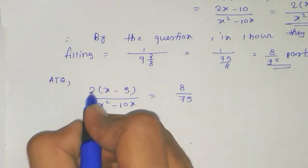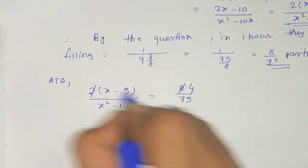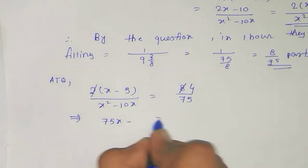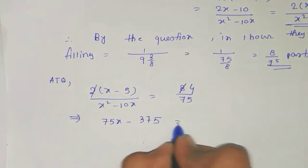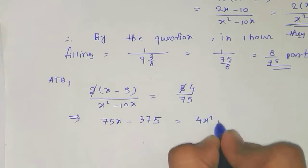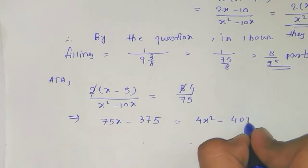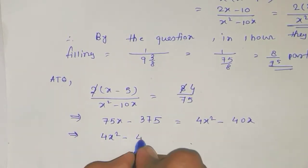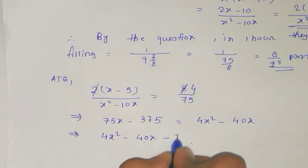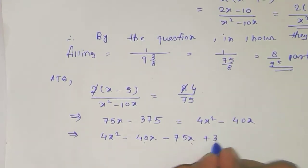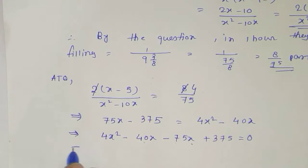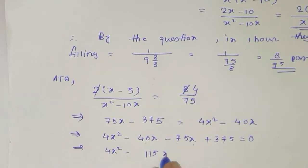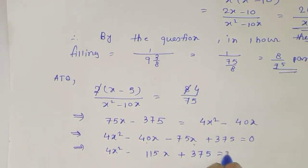Simplifying, the 2 and 8 give us 4 after cancellation. Cross-multiplying diagonally gives 75(x minus 5) equals 4(x squared minus 10x), which becomes 75x minus 375 equals 4x squared minus 40x. Taking all terms to one side gives the quadratic: 4x squared minus 115x plus 375 equals 0.